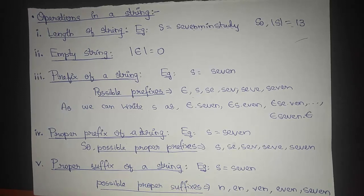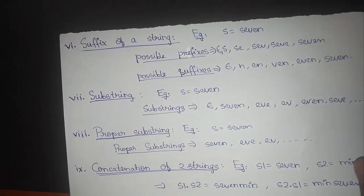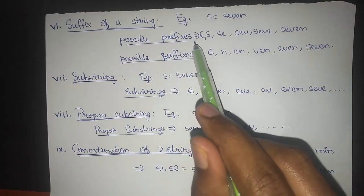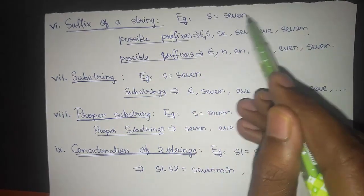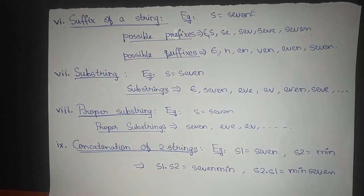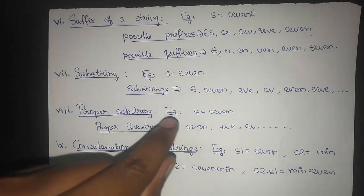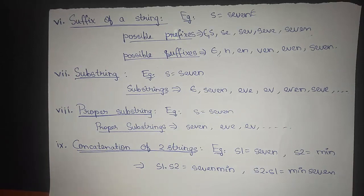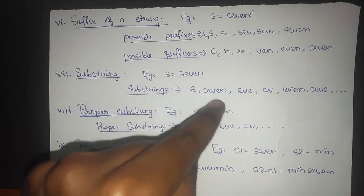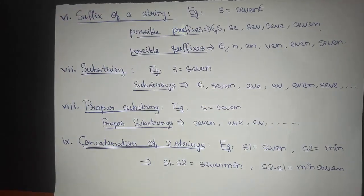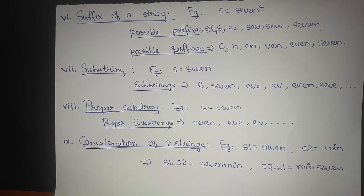A proper suffix of a string includes all possible suffixes except Epsilon and the whole string. A suffix consists of the trailing symbols, including Epsilon. A substring is obtained by deleting a prefix and suffix from the string. For example, for 'SEVEN', possible substrings include Epsilon, the whole string, 'EV', 'EVN', and so on. A proper substring similarly excludes Epsilon.